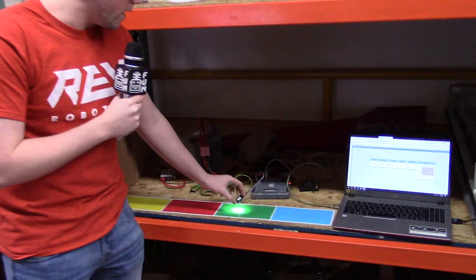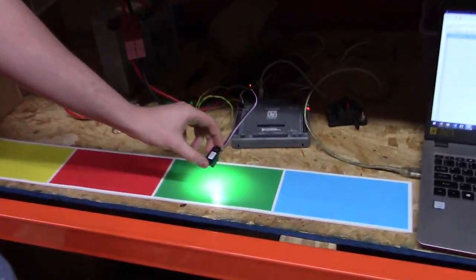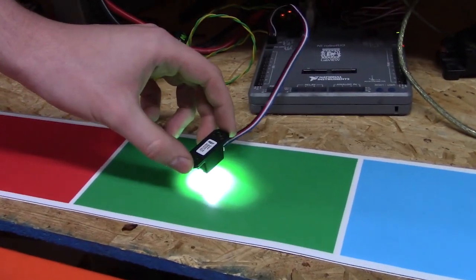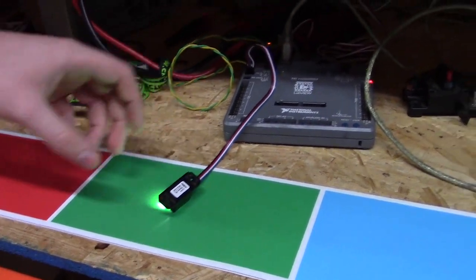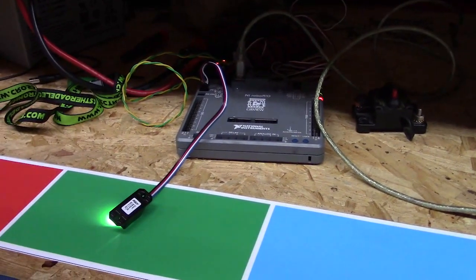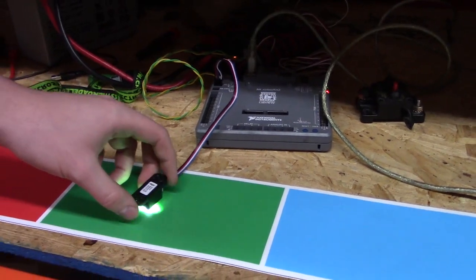Right here is the Rev V3 color sensor that you get in your kit of parts. We basically just took this, plugged it into a RoboRio just to see how it reacts to the vinyl to see if we could use it as a detection device.